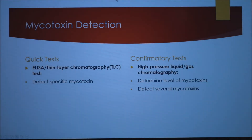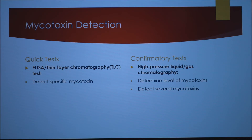There are two different categories of mycotoxin detection: quick tests and confirmatory tests. Quick tests are composed of ELISA, thin layer chromatography, and strip tests. These tests detect specific mycotoxins — about one out of 200. Confirmatory tests use high pressure liquid chromatography and/or gas chromatography, which determine the level of mycotoxins in parts per billion or parts per million and can detect several mycotoxins in a batch, about 20 out of 200.